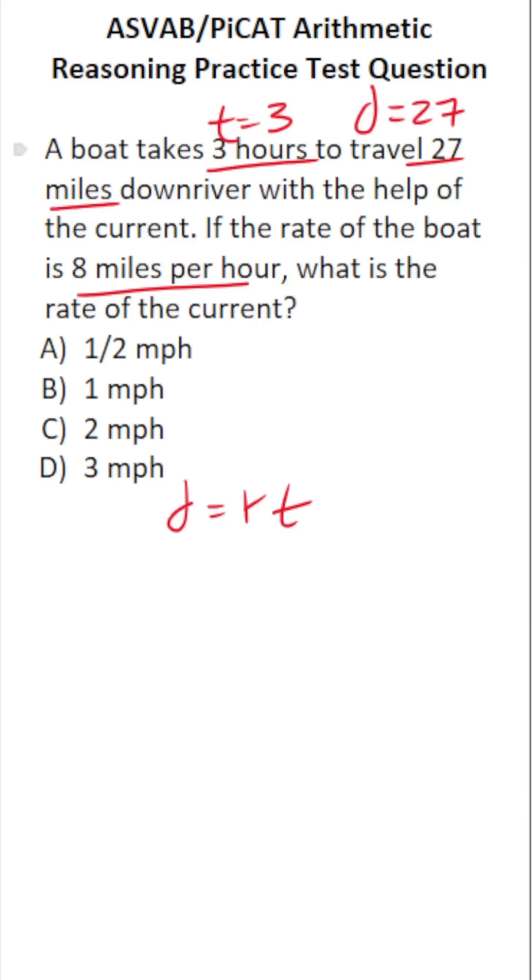We know the boat is going at a rate of eight miles per hour, but we have this new variable called current that we have to account for. I'm going to give current the letter variable C. So we have to make a modification to the distance rate and time formula to solve this one. Specifically, we're going to make this modification.